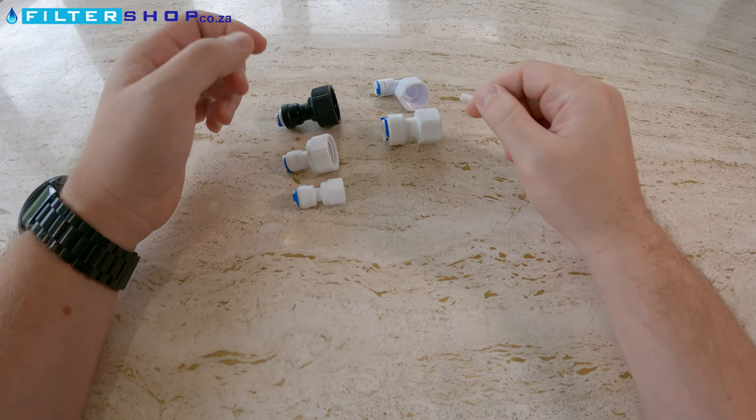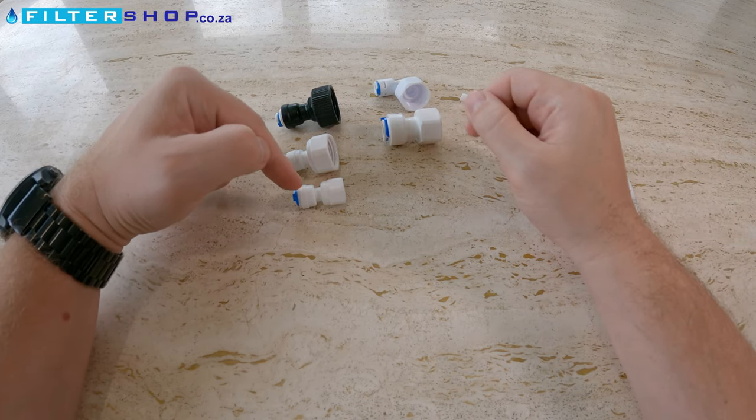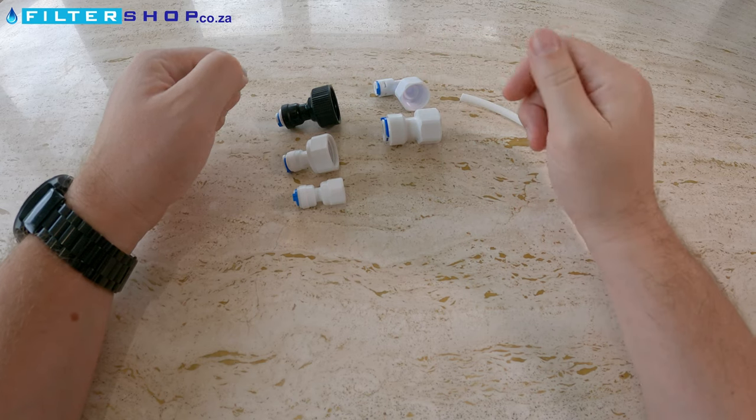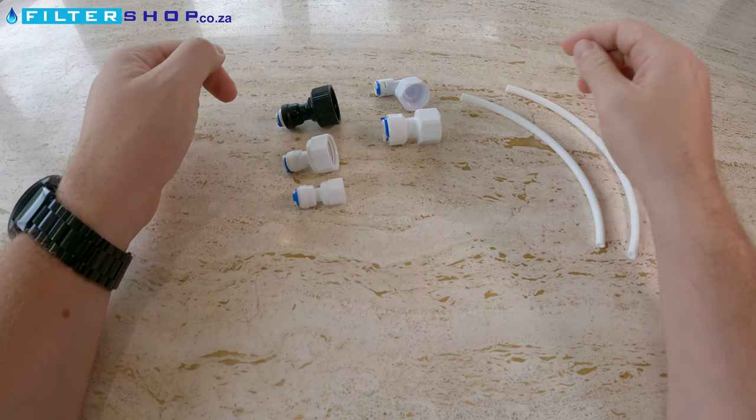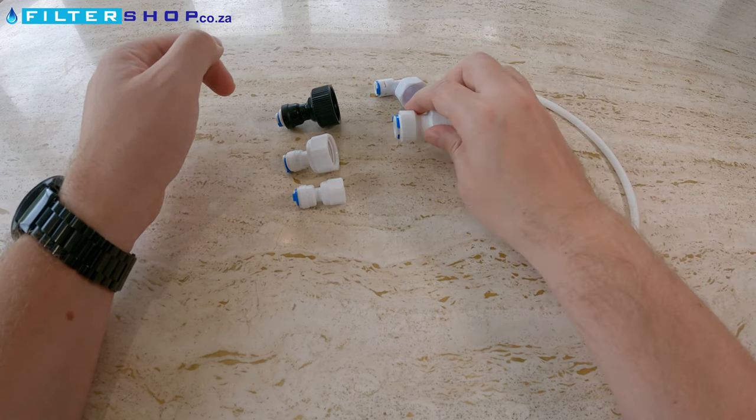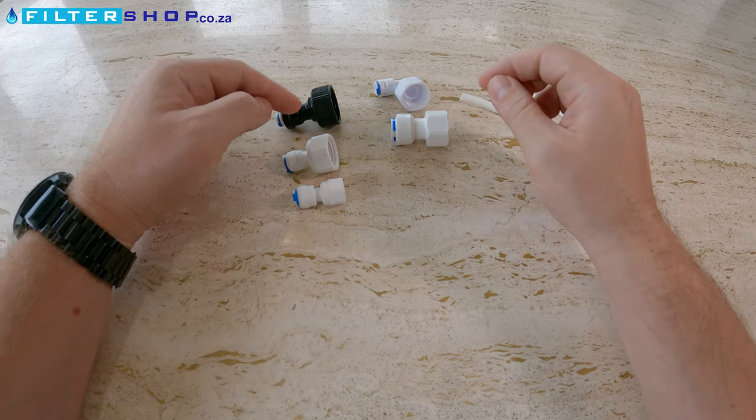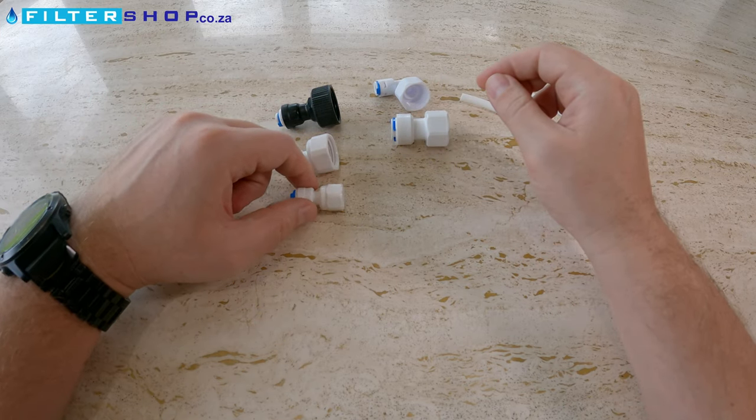These are pipe to female threaded connections. They're available in straights and elbows and for different size pipes, for both quarter inch and three eighths pipe, and with different size connections for the thread.